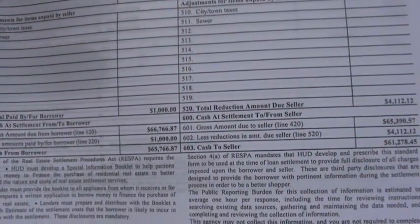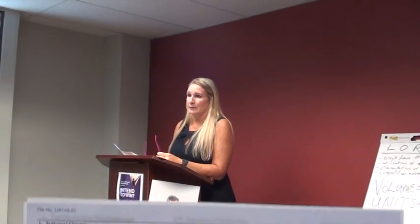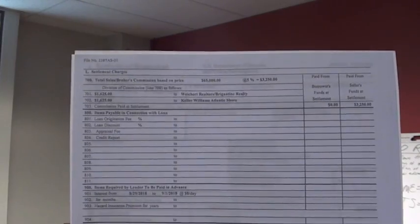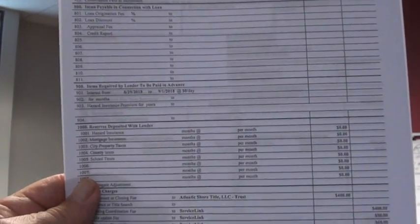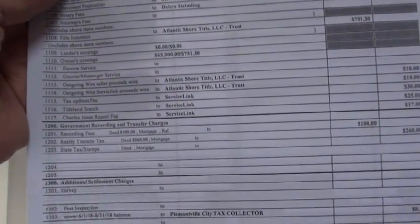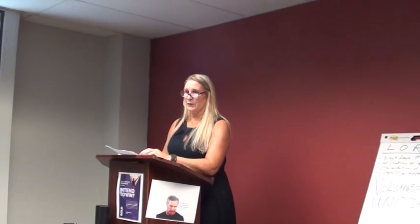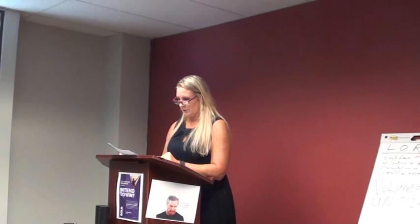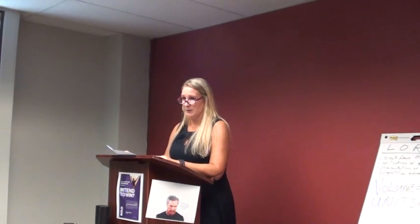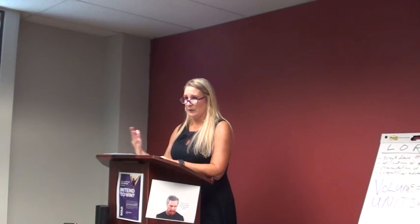You'll hear from a lot of your customers — they don't know what they're looking at. On the HUD, the longer form, it's two sides. The left-hand side is for the buyer. At the top we show the debit — what they're going to be paying out — under J. We start with the sales price of the property, and to that we add line 103, which is the closing charges, which is the second page. We go over that with the consumer after we show them this page.